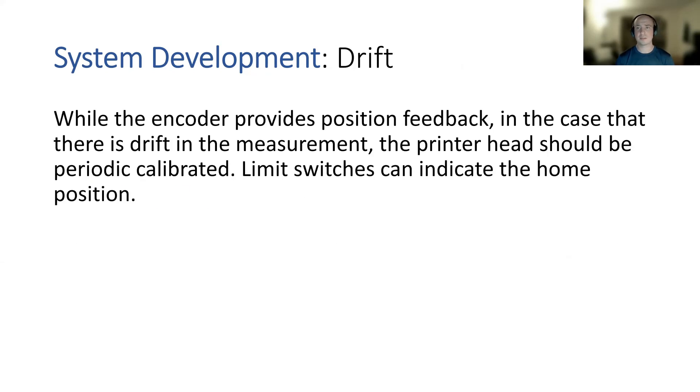Another thing to look at is drift. While the encoder provides positional feedback throughout the control system, sensors often do drift over time. So to prevent this, we'll want to calibrate the machine every once in a while. That can be done by having some home position where the system recognizes its home limit switches.